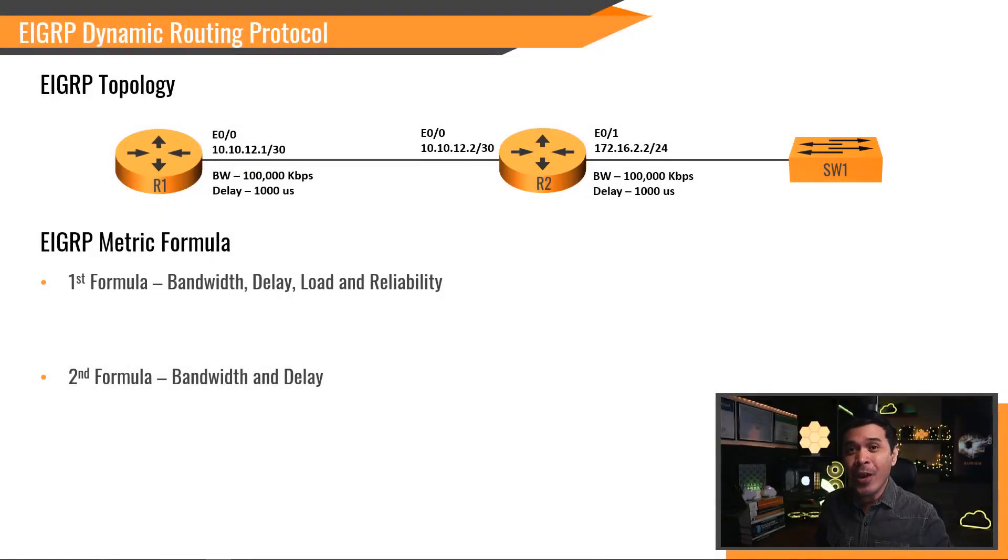We have here our network topology. We have R1 connected to R2, and R2 connected to Switch 1. Let's use R1 as our local router. R1 needs to learn the network behind R2, which is 172.16.2.0/24. What do we need to do in order for R1 to learn this network? We will use a routing protocol. Which routing protocol? We will be using EIGRP dynamic routing protocol. In dynamic routing protocol, we have what we call metric. Metric is a calculated value in determining the optimal route for sending network traffic.